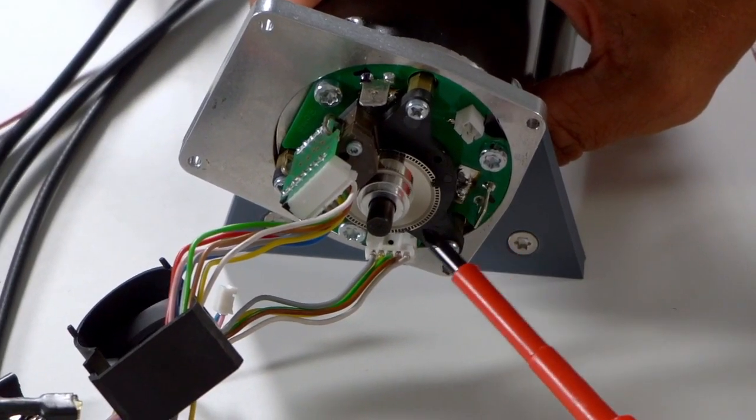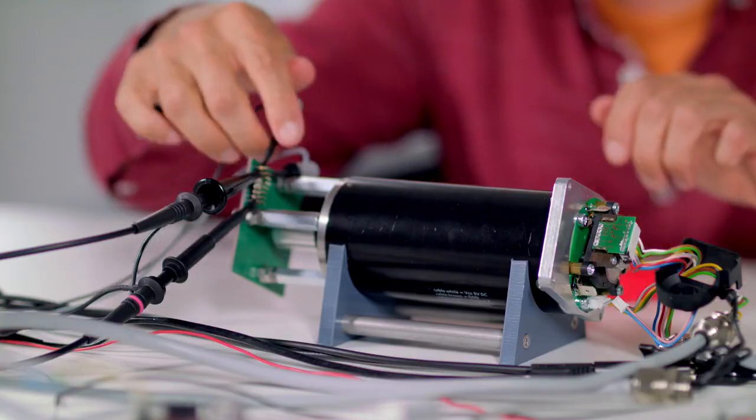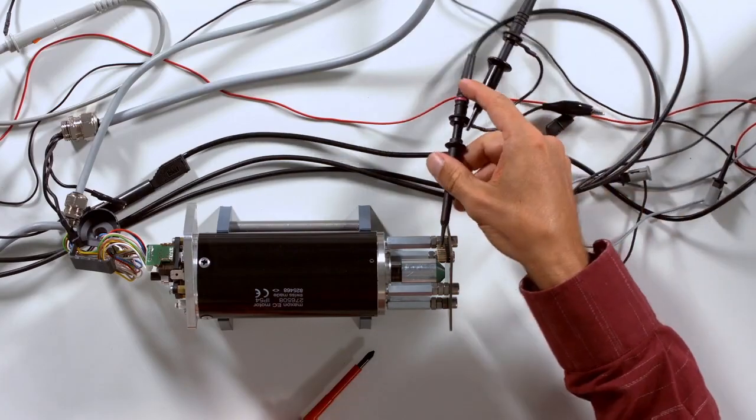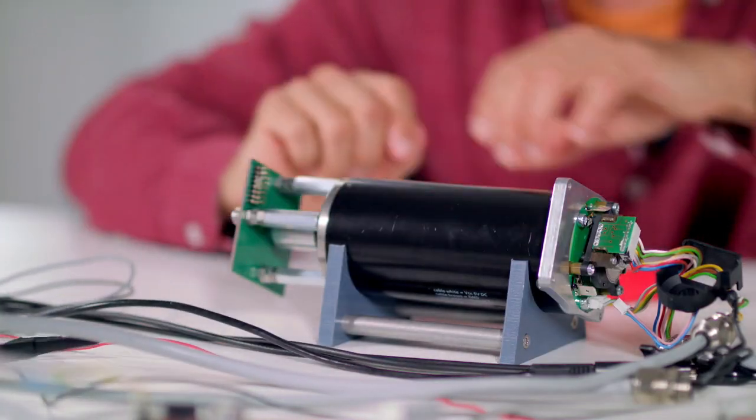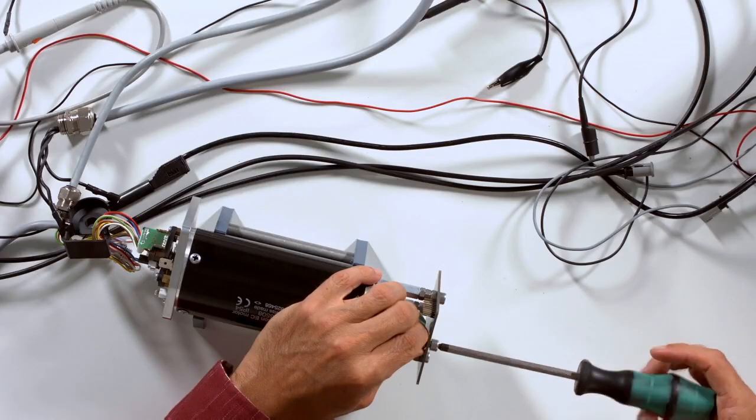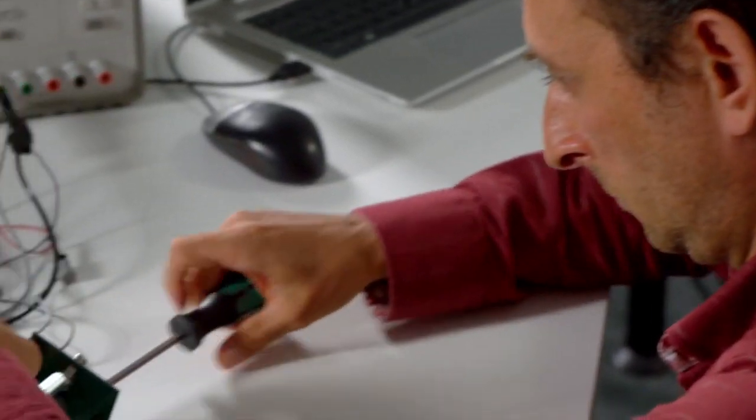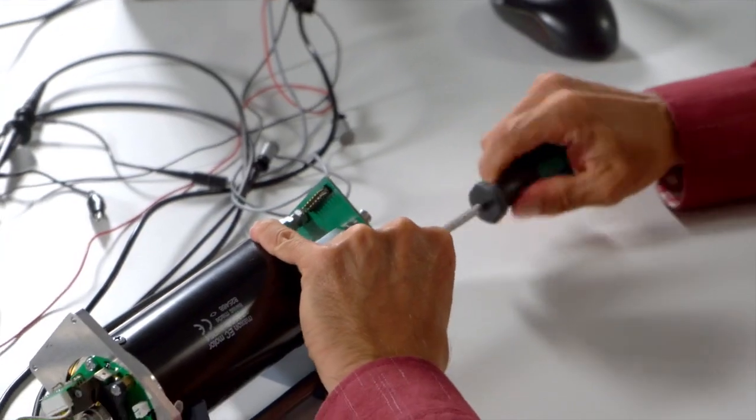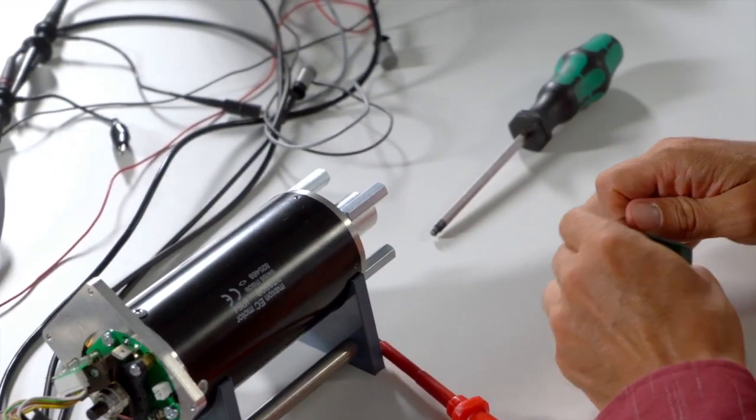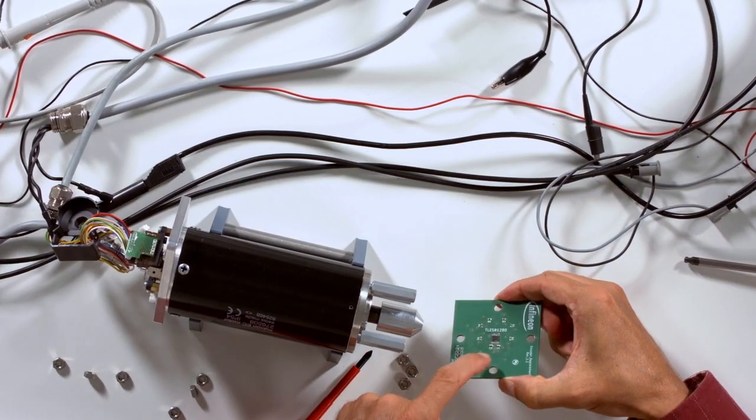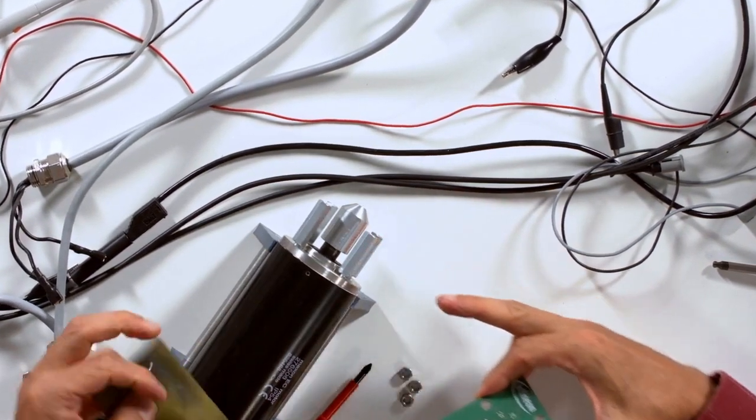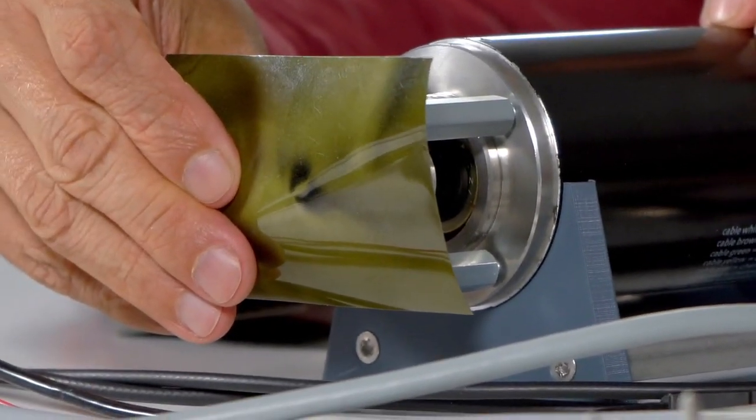Here you see the optical encoder. Here you see the TLE5012B, here we have the mounted magnet on the shaft and here you can see that it's a diametral magnet.